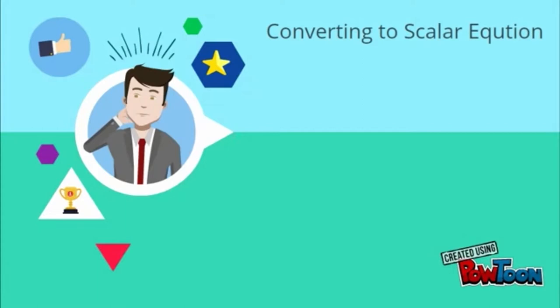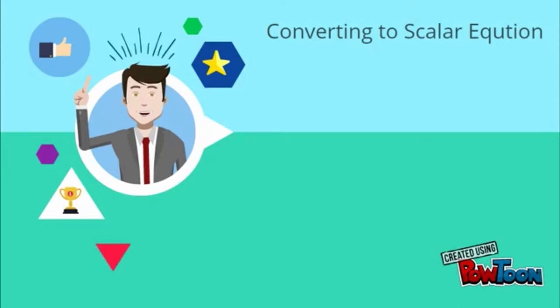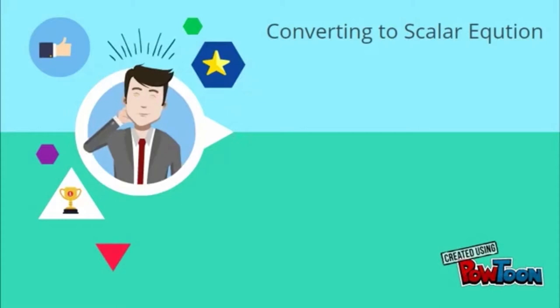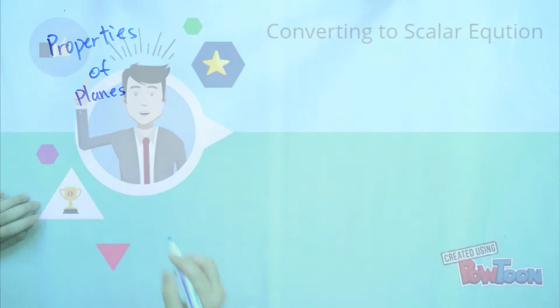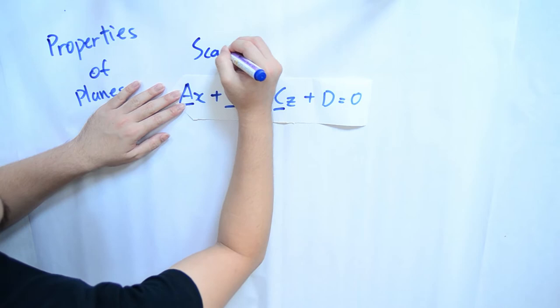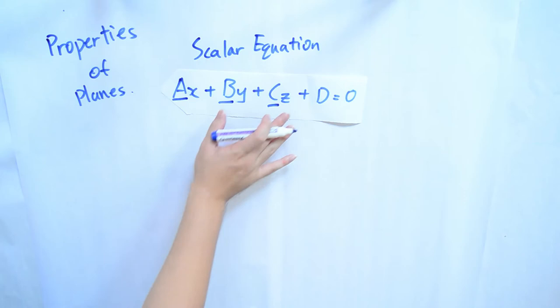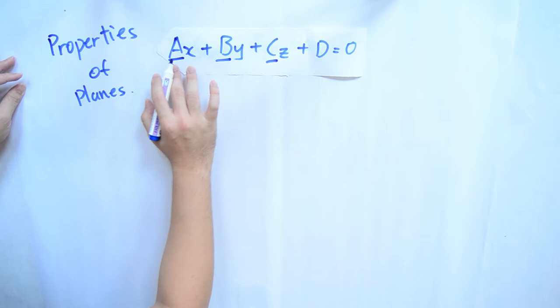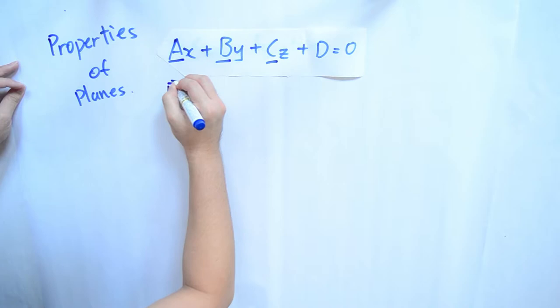The scalar equation has the form ax plus by plus cz plus d equals 0. The capital letters a, b, and c are the coefficients that define the normal plane. The normal vector is expressed with the symbol n with an arrow on top. Now let's go through some examples to understand how we apply this equation.